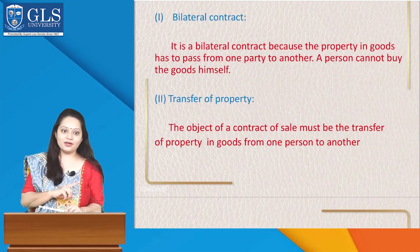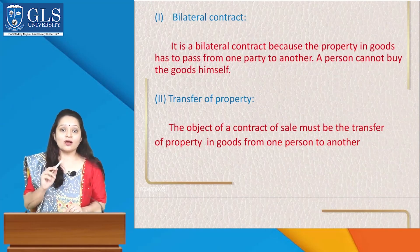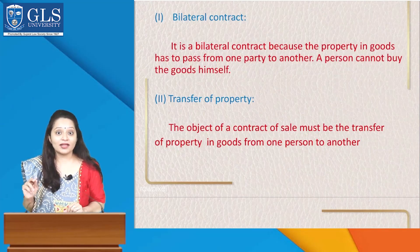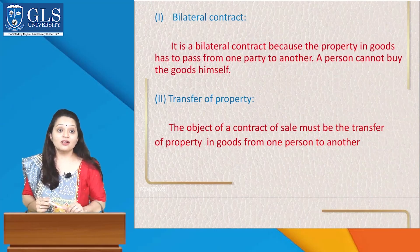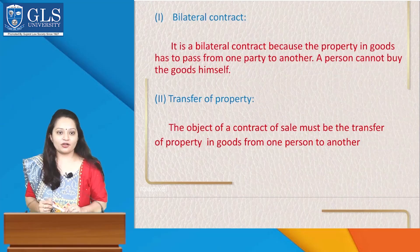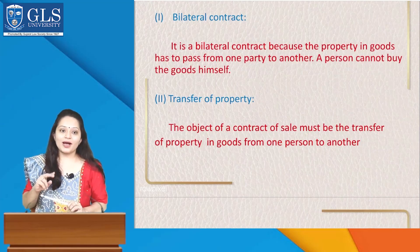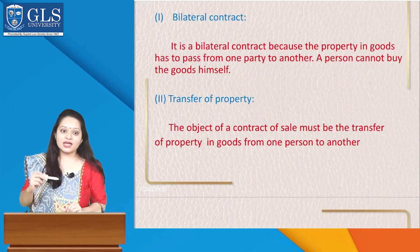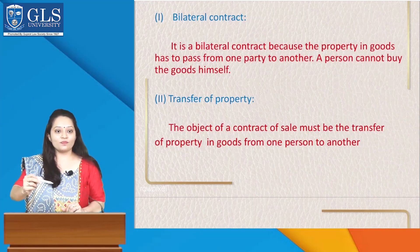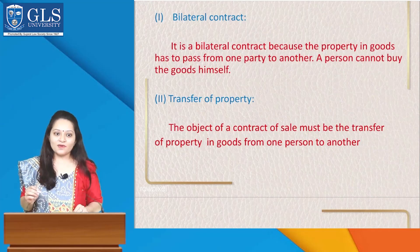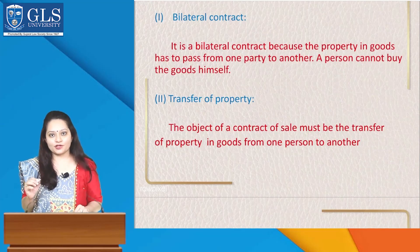So there must be a bilateral contract. One party is a buyer, the other party is a seller. It is a bilateral contract because the property in goods has to pass from one party to another — a person cannot buy goods himself. However, a joint owner can be a party to a contract of sale. For example, if a car is owned by two joint owners A and B, and A agrees to sell his share to B, he can transfer that share to B and make B the sole owner.